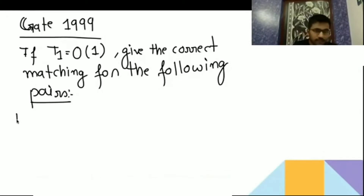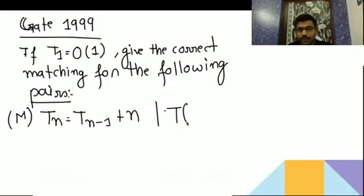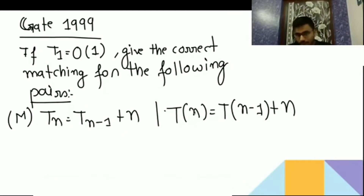So option M is saying T(n) = T(n-1) + n. This means T(n-1) + n. So T(n) is a function of n, then it is equivalent to T(n-1) + n.